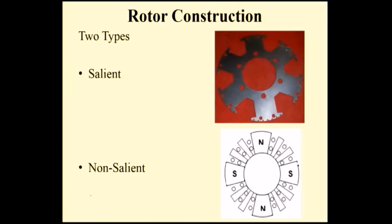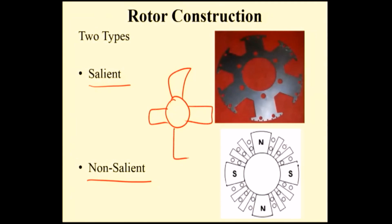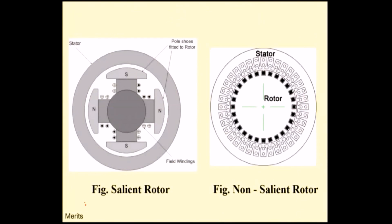Now for rotor construction: the stator inner periphery has slots, and the stator stamping is made of silicon steel or good magnetic material to reduce eddy current loss and hysteresis loss. There are two types of rotor: salient pole rotor and non-salient pole rotor. Salient pole rotor has projected poles — the poles are projected outward. Non-salient pole rotor is a smooth cylindrical type. In a salient pole rotor the air gap is non-uniform, whereas in a non-salient pole rotor the air gap is uniform. This is the key difference between the two types.